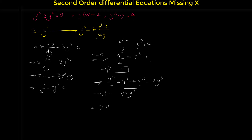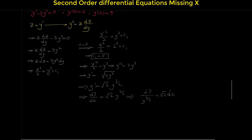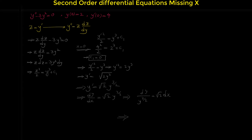Note that the square root of 2y cubed equals the square root of 2 times y to the power 3/2. We can write y prime as dy over dx, and then rewrite the equation as dy over y to the 3/2 equals square root of 2 dx. This is a separable differential equation, so we integrate both sides.